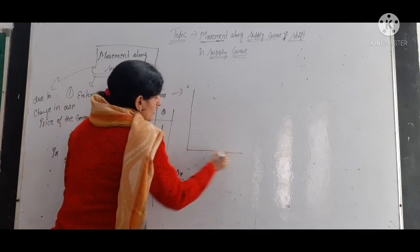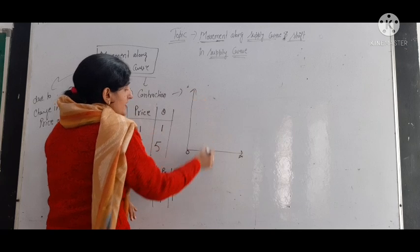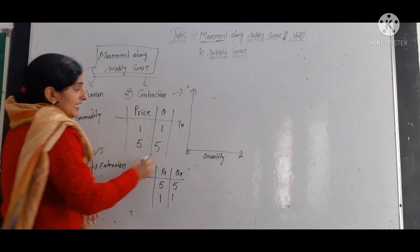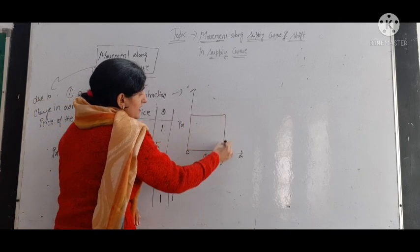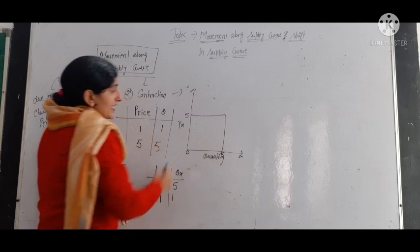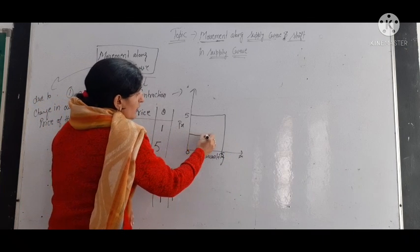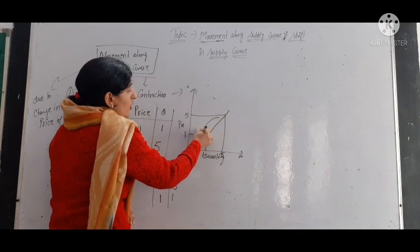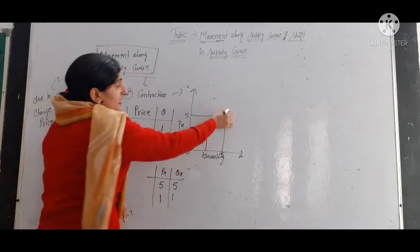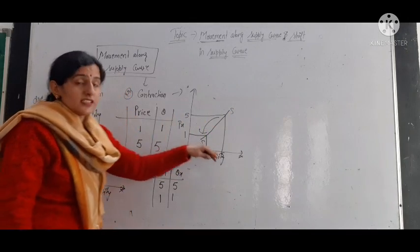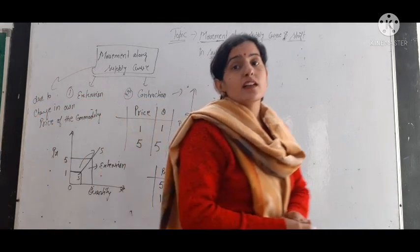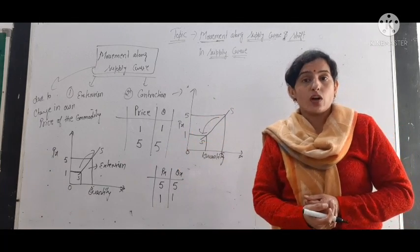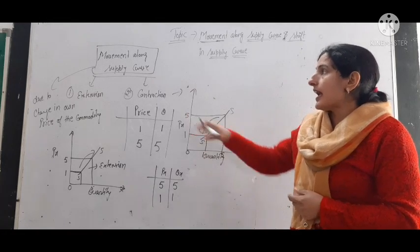We will show contraction on a diagram. On the OX axis we take quantity, and on the OY axis we take the price of the commodity. Initially, when the price is 5, the quantity supplied is 5. When the price decreases and becomes 1, the quantity supplied also becomes 1 — the quantity supplied is decreasing. This is the contraction of the supply curve, which is due to change in the own price of the commodity.